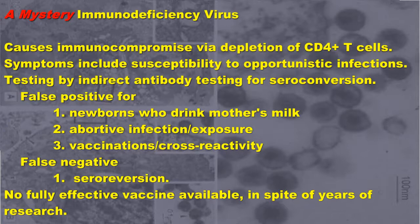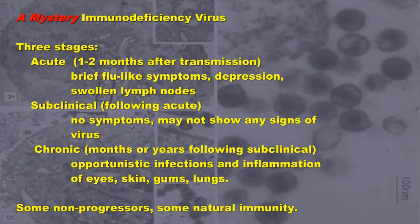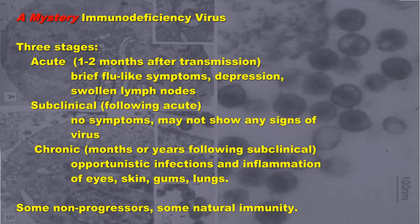False negatives are often caused by seroreversion, where antibody-producing cells are lost during the subclinical phase. There are no fully effective vaccines available in spite of years of research. There are three stages to the disease. The acute stage happens immediately following transmission, with brief flu-like symptoms, depression, and swollen lymph nodes.